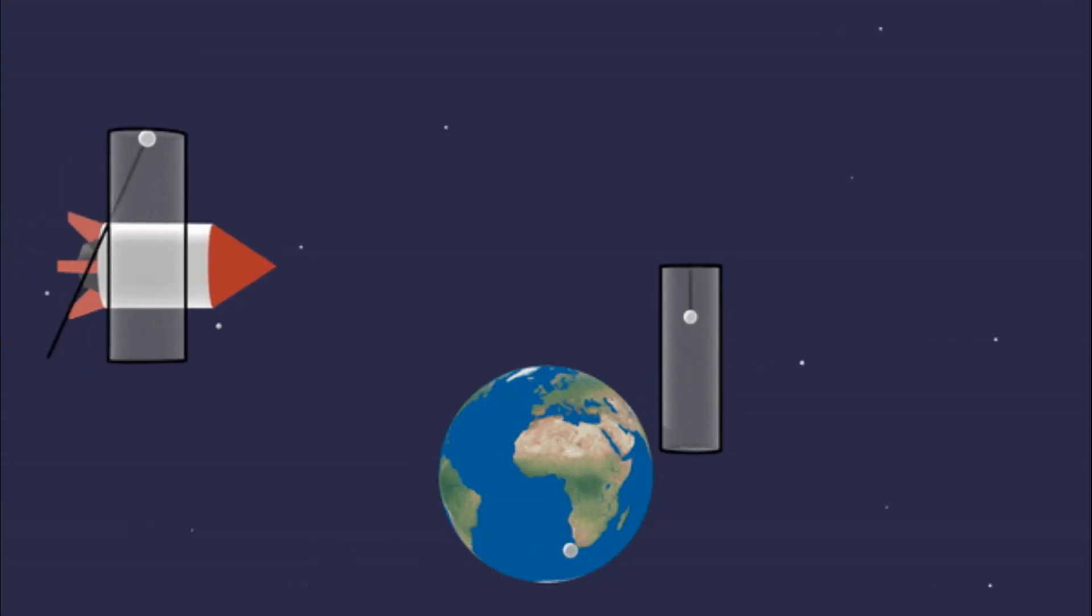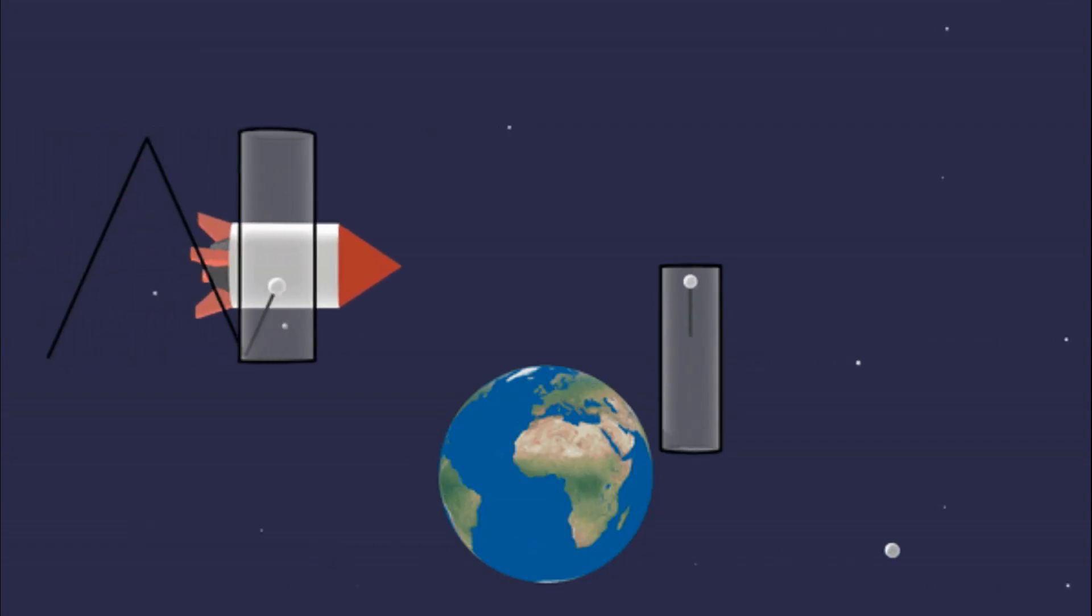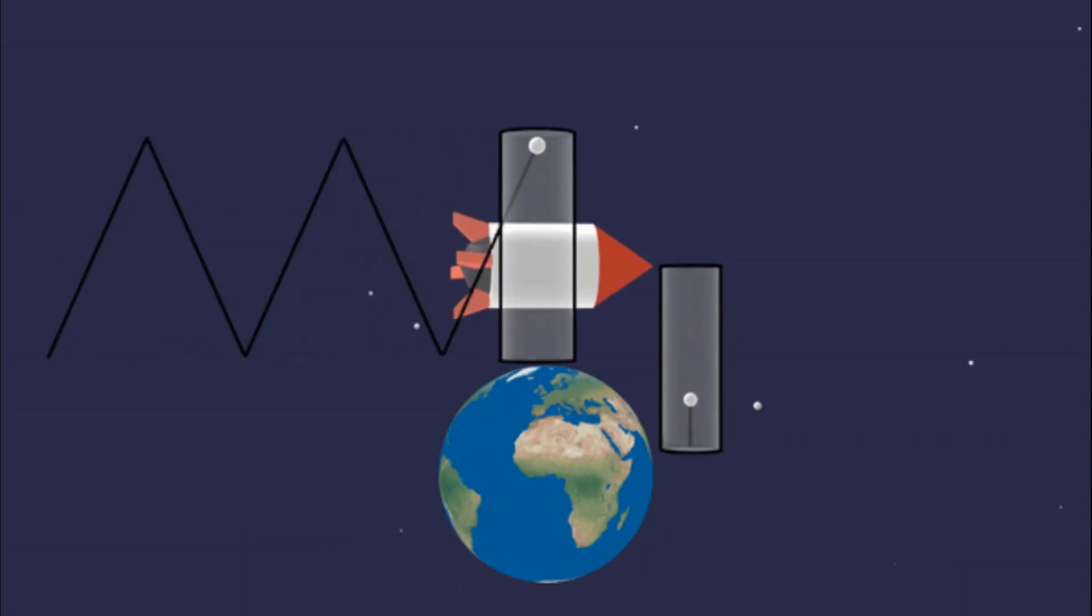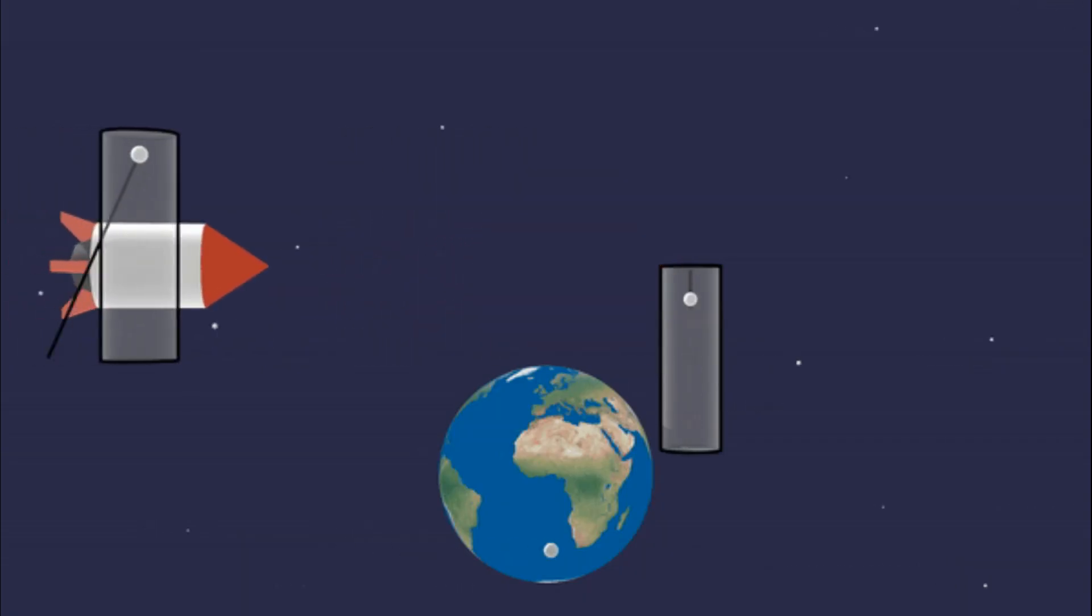But to an external observer watching the ship speed by, the scene unfolds differently. From the outside, the spaceship is moving horizontally as the photon is traveling.